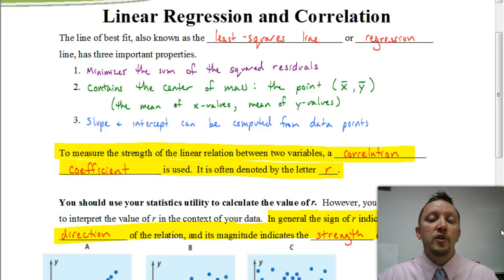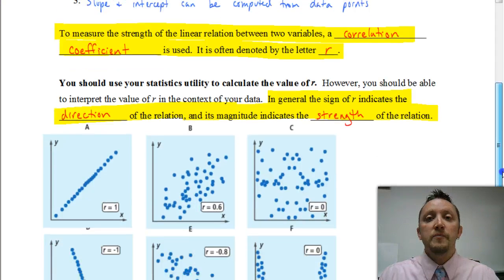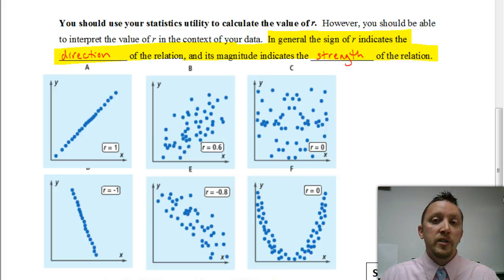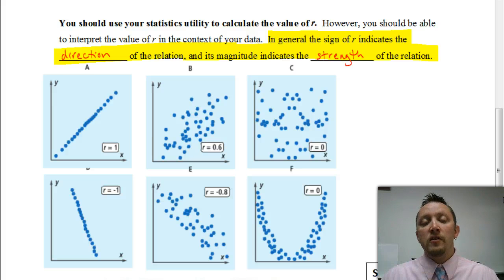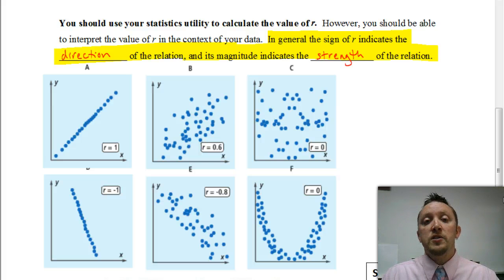Let's look at what the correlation coefficient — that value for r — tells us. The correlation coefficient tells us two things. The first thing is it's going to tell us if the graph is increasing or decreasing, meaning the direction of the graph. If the r value is positive, that means as you read the graph from left to right, the graph is increasing. If the value for r is negative, the graph from left to right would be going down and decreasing. You can see that here — r equals positive one shows an increasing line, and r equals negative one shows a decreasing line.